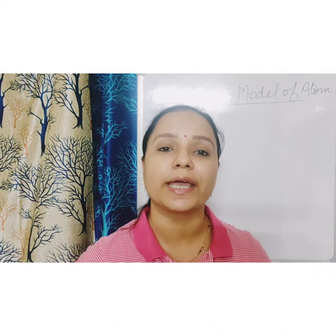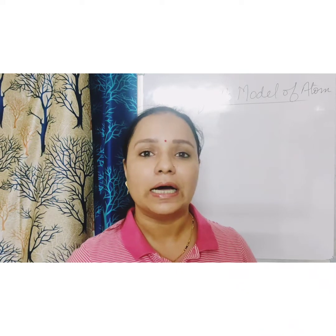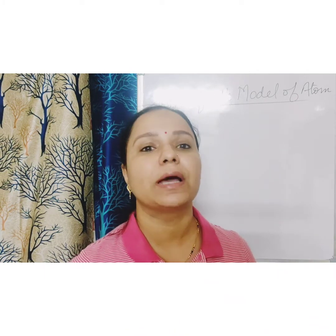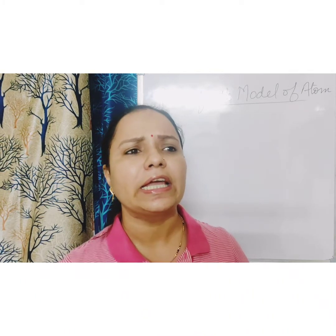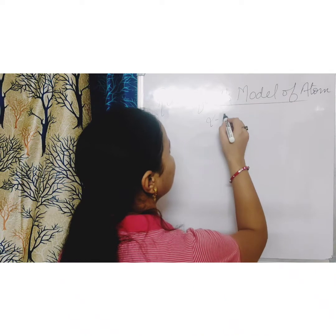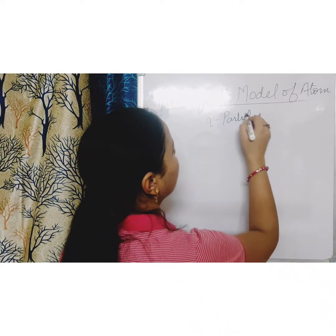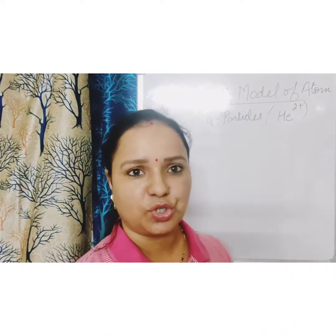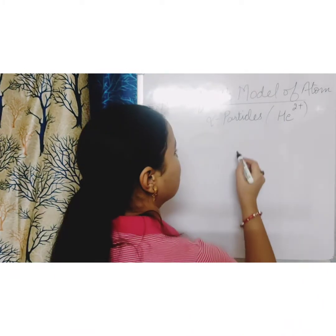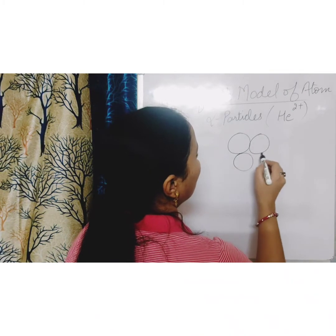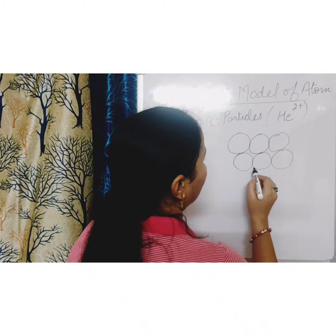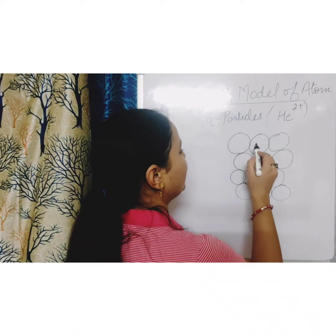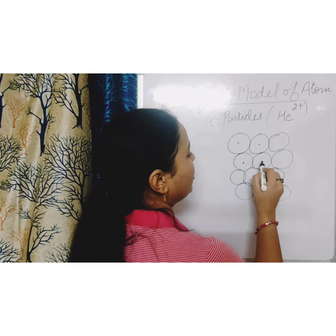In this video I will discuss the experiment carried out by Rutherford to give his very much accepted views about the structure of the atom. What he did basically was he took alpha particles, which are helium 2 positive ions. For his experiment he chose a very thin gold foil in which the atoms could have this kind of arrangement, with the nucleus at the center.